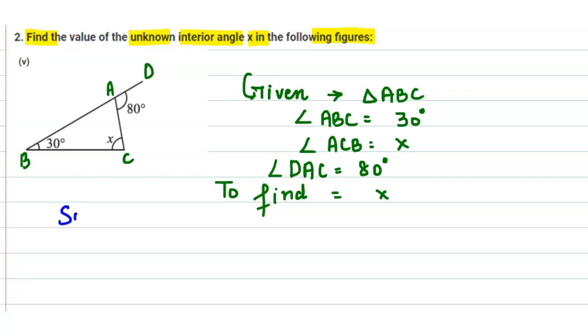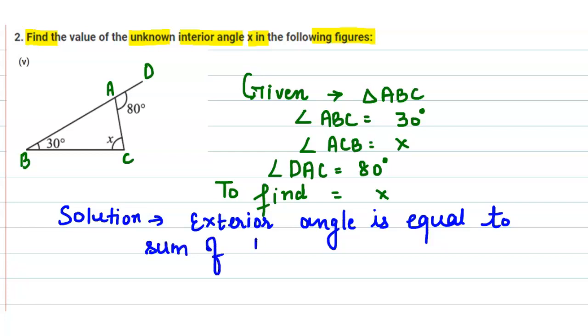So let us solve this. We know that an exterior angle is equal to the sum of two opposite interior angles.